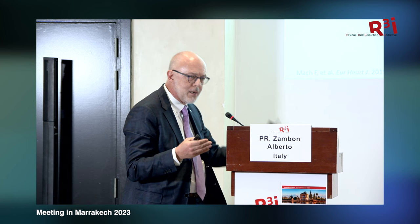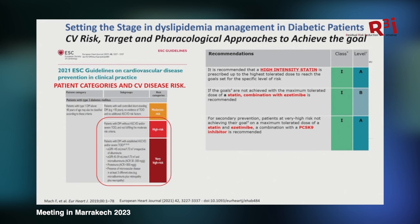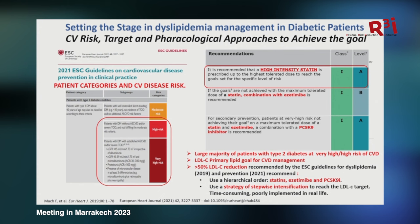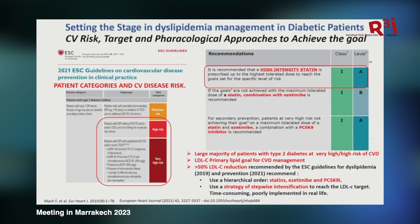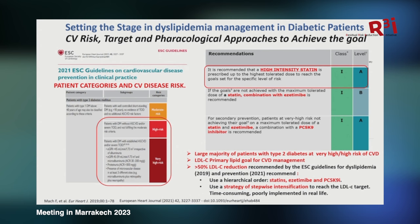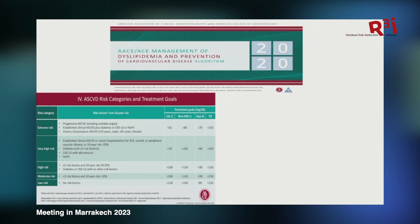All the guidelines suggest — and this is appropriate because it's based on the strength of the evidence — a stepwise approach. We start with a statin, wait, look at the patient profile; if we don't reach the goal, we add ezetimibe, wait again, and then eventually add PCSK9 inhibitors in the form of monoclonal antibodies or small interfering RNA. The problem is this hierarchical stepwise approach is time-consuming, requires multiple visits, and is poorly implemented in real-life situations.